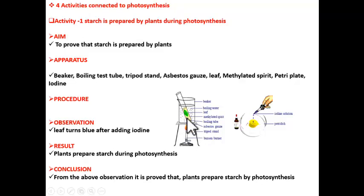As the water boils, it heats methylated spirit and this hot methylated spirit removes green color from the leaf and leaf turns pale yellow. So now remove that leaf, put it in petri dish. Now perform iodine test. Add a few drops of iodine over the leaf and observe the color change.